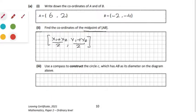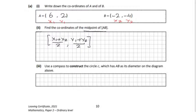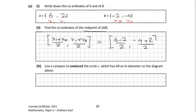We set A as (x₁, y₁) and B as (x₂, y₂). The midpoint C will be: x₁ plus x₂ is 6 plus (−2) all over 2, and y₁ plus y₂ is (−4) plus 2. Putting them together, we get C = (2, −1).